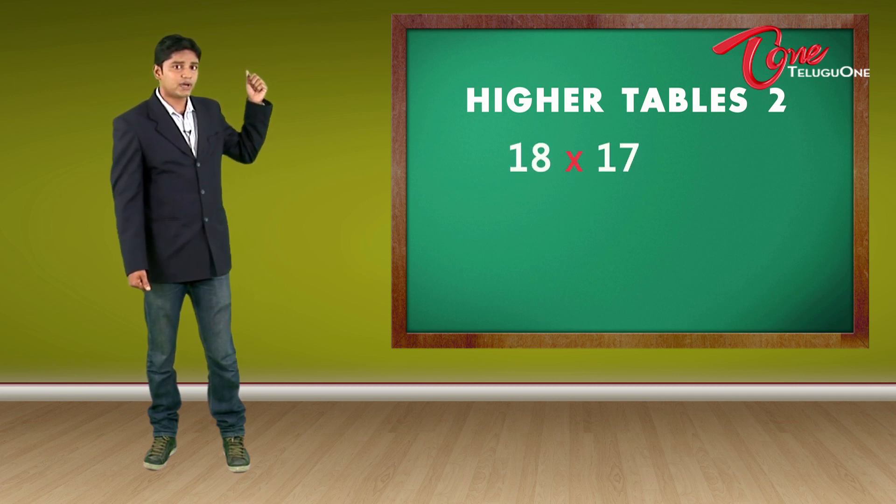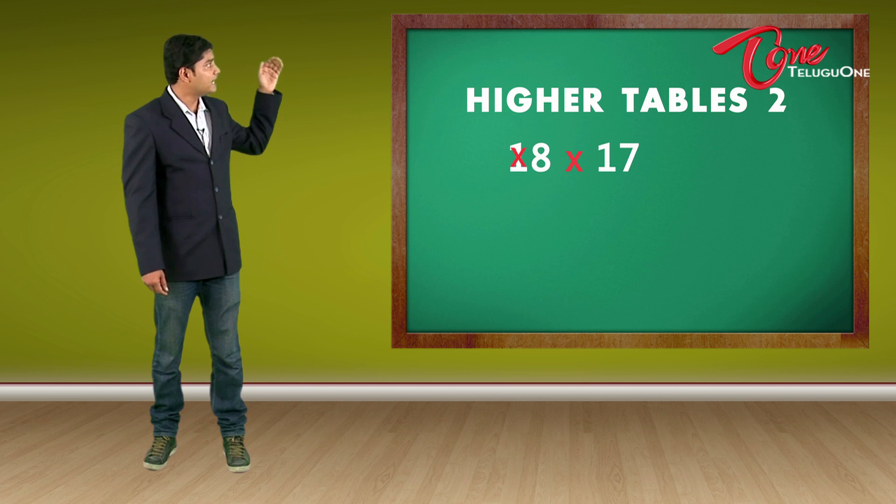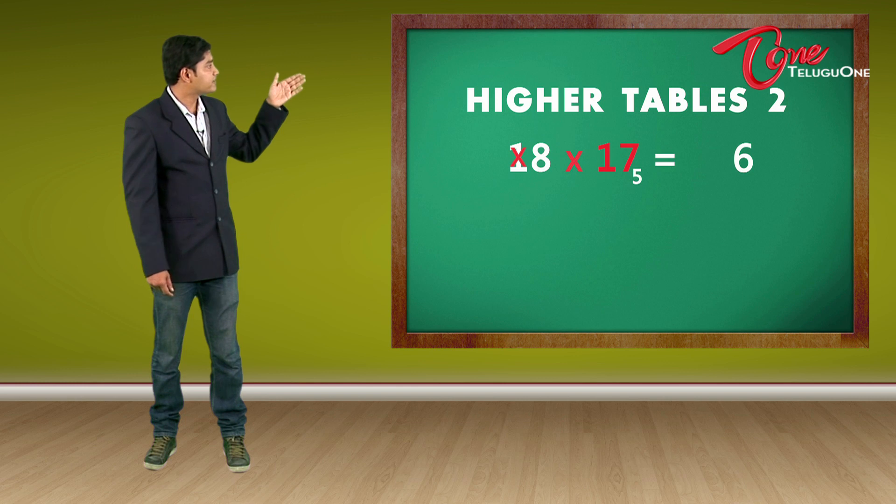Like in Higher Tables 1, I am not going to use the first one. But while multiplying, I am going to use only 8 times 7. So the first step, 8 times 7 is 56. Now the second step is the same. It is an addition. 17 plus 5 is 22.